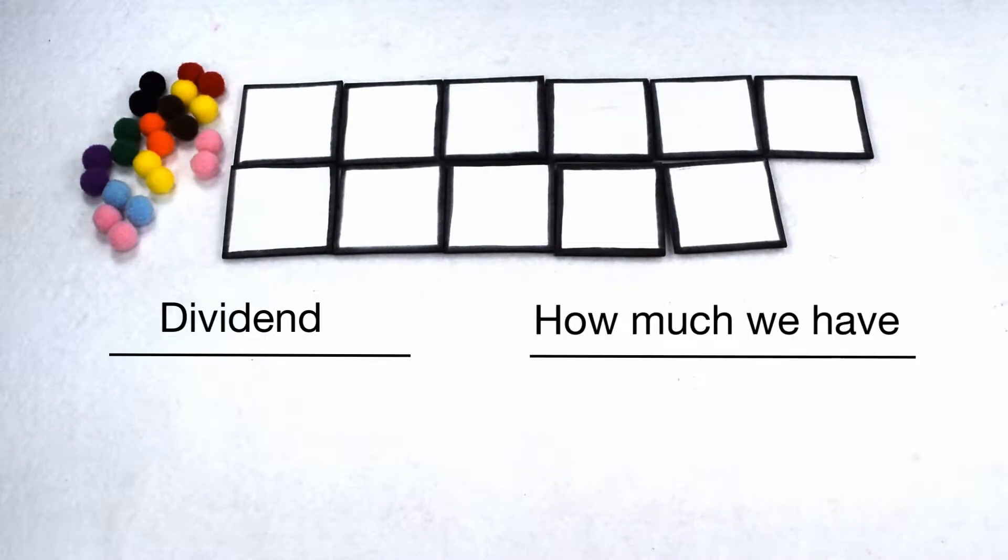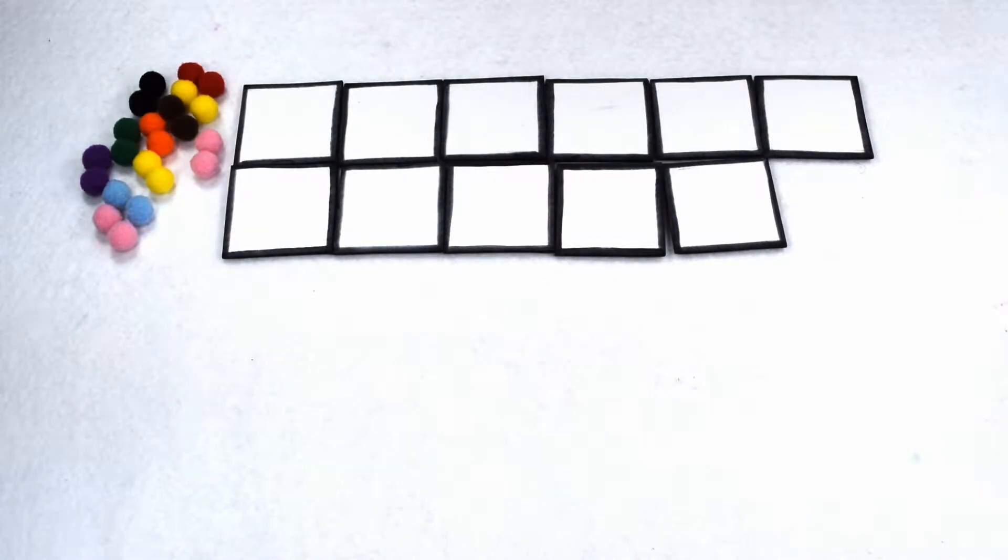In a division problem, the dividend tells us how much we have and the divisor tells us how we group it. How can we determine which numbers can be divisible by 11 without any remainders? Well, there's a couple ways to determine that. Let's start by doing an example.